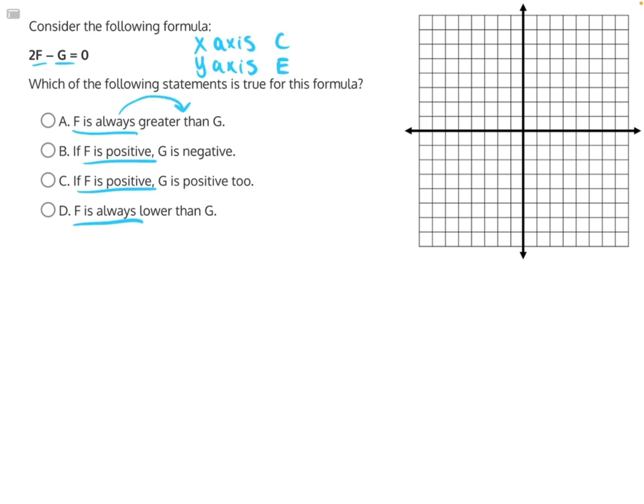F is the cause that affects our variable G. If F is positive, then G is this. If F is negative, then G is this. So we can label our axes accordingly. F is our x-axis and G is our y-axis.